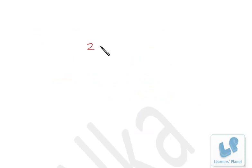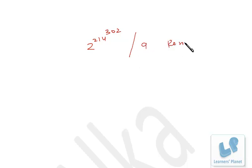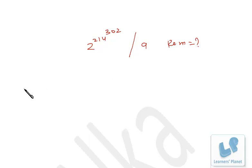A student sent this problem: 2 raised to (214 raised to 302), if divided by 9, the remainder is 1. We have already solved good number of problems based on remainder and number system. In this particular case, we have 2 cubed which is 8, and when 8 is divided by 9, the remainder is minus 1.